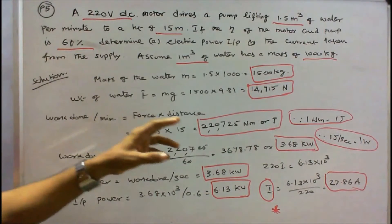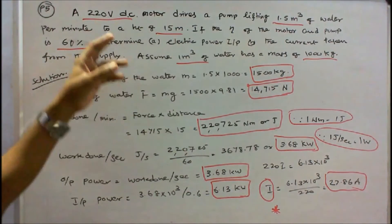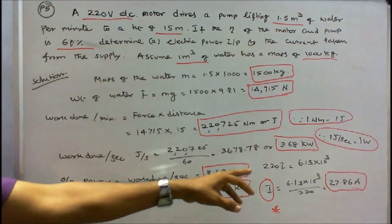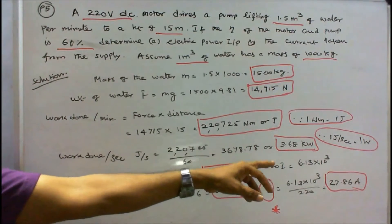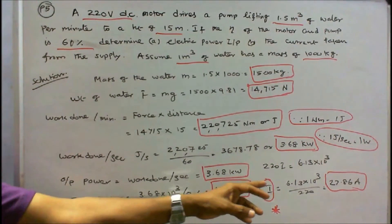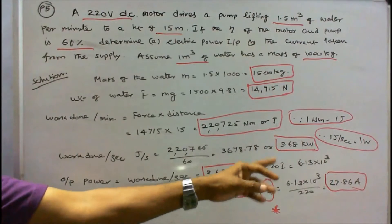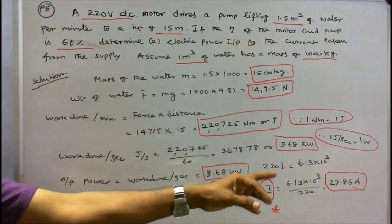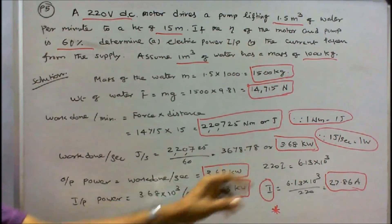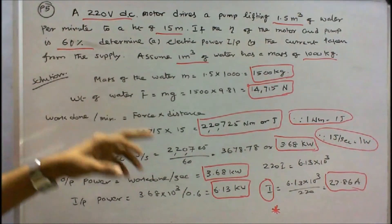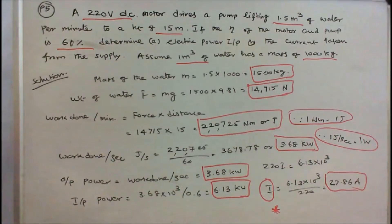Power P is equal to V into I. V is given 220. 220 into I is equal to 6.13 into 10 power 3. Therefore I is equal to 6.13 into 10 power 3 divided by 220, that is equal to 27.86 amps. So the current taken from the supply is 27.86 amps.